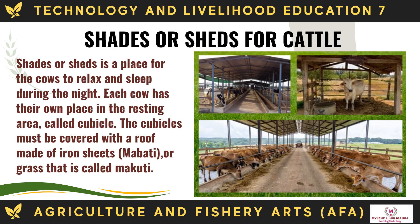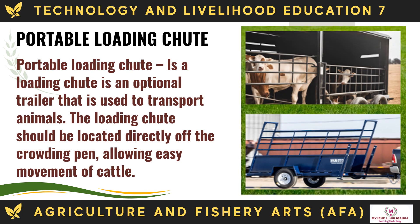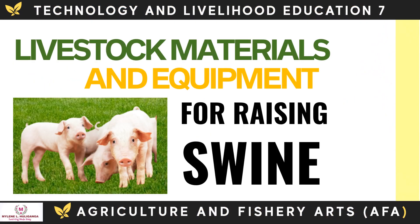The shade or shed is a place for cows to relax and sleep during the night. Each cow has its own place in the resting area called a cubicle. The cubicles must be covered with a roof made of iron sheets, mabati, or grass called makuti. The portable loading chute is an optional trailer used to transport animals. It should be located directly off the crowding pen, allowing easy movement of cattle.